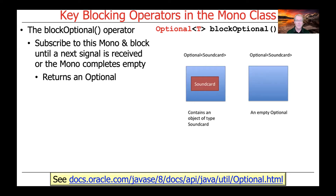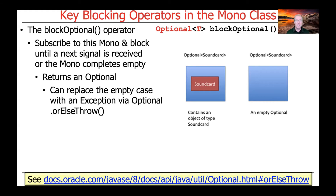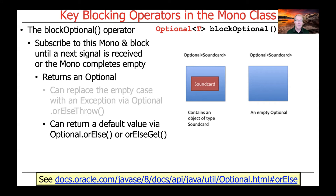You oftentimes have various resources that may or may not exist — for example, a computing device that would or would not have a sound card. If you have an Optional, either you can have a sound card and retrieve it using calls on the Optional object, or you could have an empty Optional in which certain methods become no-ops. You can use this to replace the empty case by throwing an exception using orElseThrow, or return a default value using orElse or orElseGet.